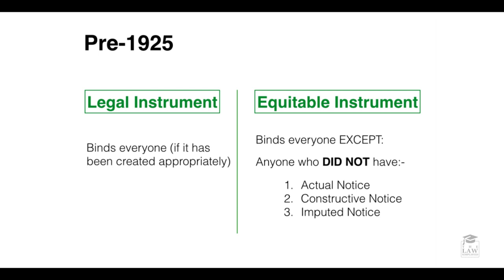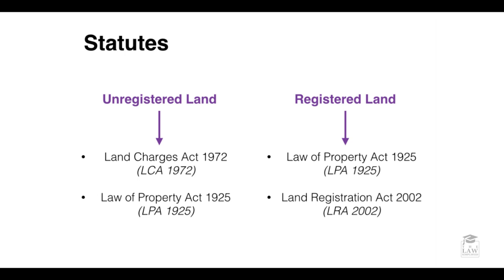In relation to the period before 1925, a legal instrument, whatever it might be, binds everyone if it is created properly. Contrarily, an equitable interest binds everyone — just like a legal instrument — except anyone who did not have actual notice, constructive notice, or imputed notice.